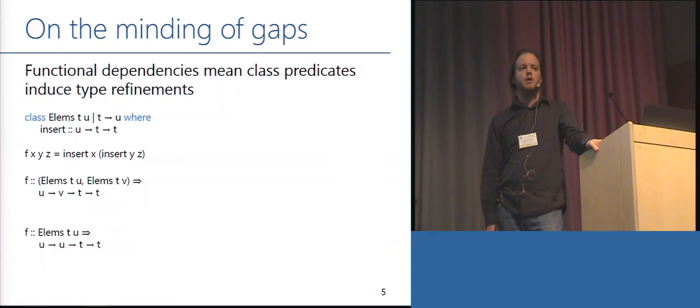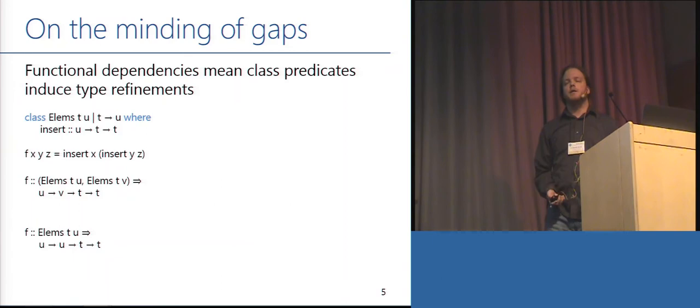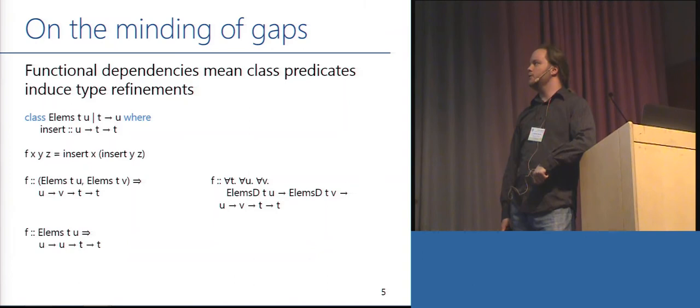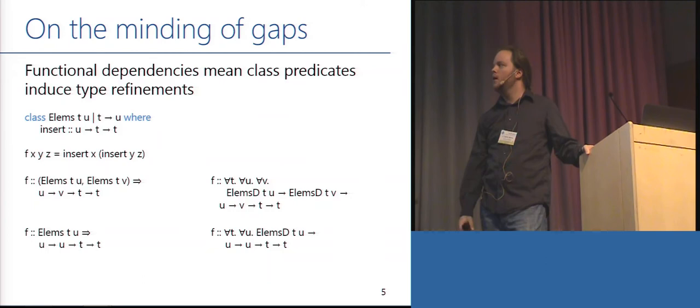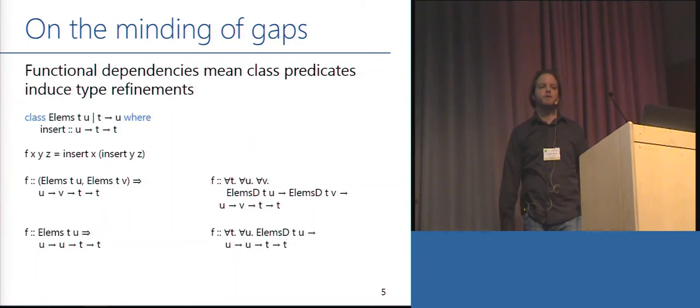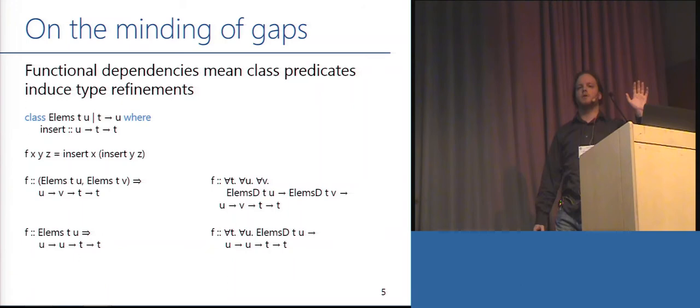But if we translate these into an explicitly typed system, the first type has three type variables T, U, and V with some dictionaries, while the second has two type variables T and U with one dictionary. We can use the first to implement the second, but not vice versa — there's no way to construct an implementation of the second thing from only the first. And you might say we solved that problem — this is precisely what we introduced System FC to solve. But the point is this is just one instance of a larger problem.